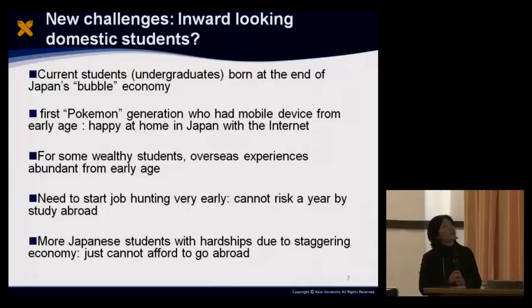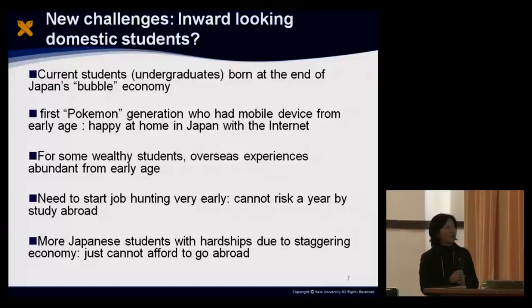Current undergraduate students especially are all born at the end of Japan's so-called bubble economy, so they have never seen a really affluent Japanese society. They have grown up watching their parents work hard but seeing their lives become less affluent every year. I would like to call them the Pokemon generation — they are the ones who have had mobile devices from quite an early age, and for them, the internet is just there at home. So they are quite happy at home in Japan with the internet and don't think it's necessary to go out and have an adventurous life.